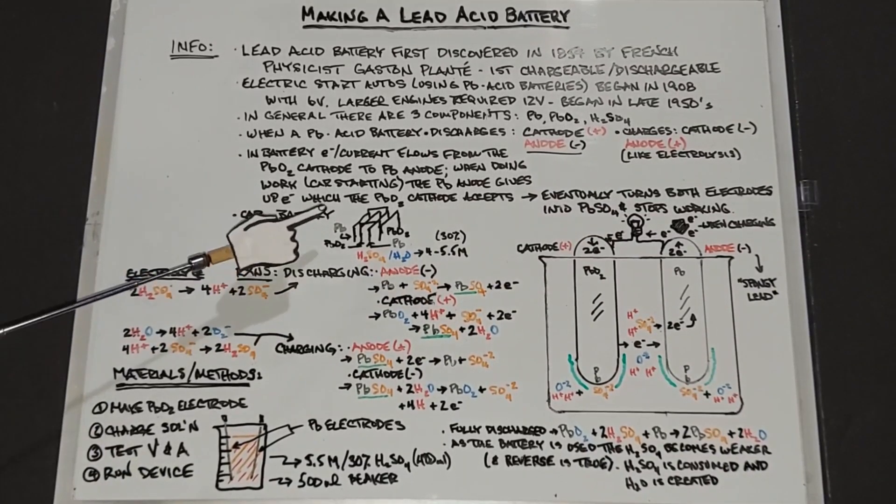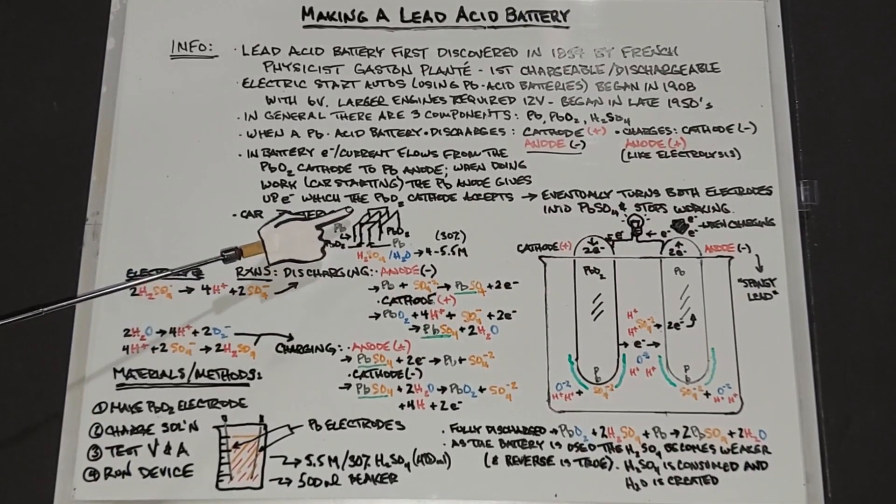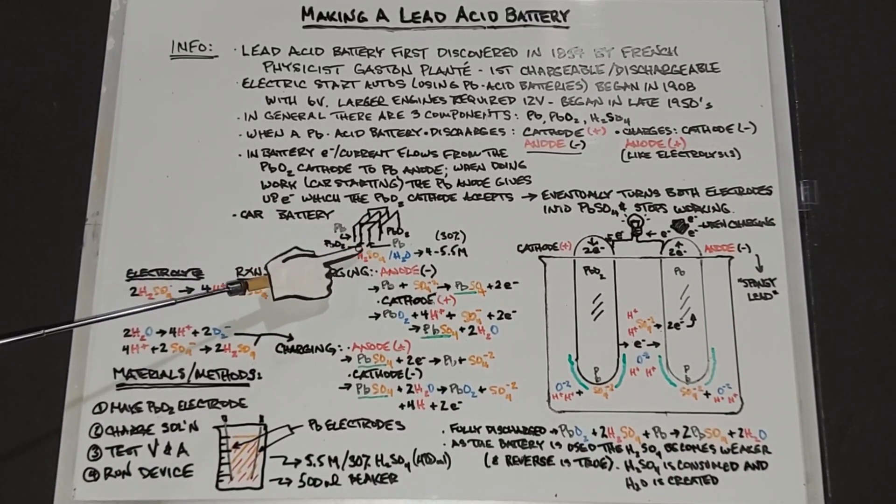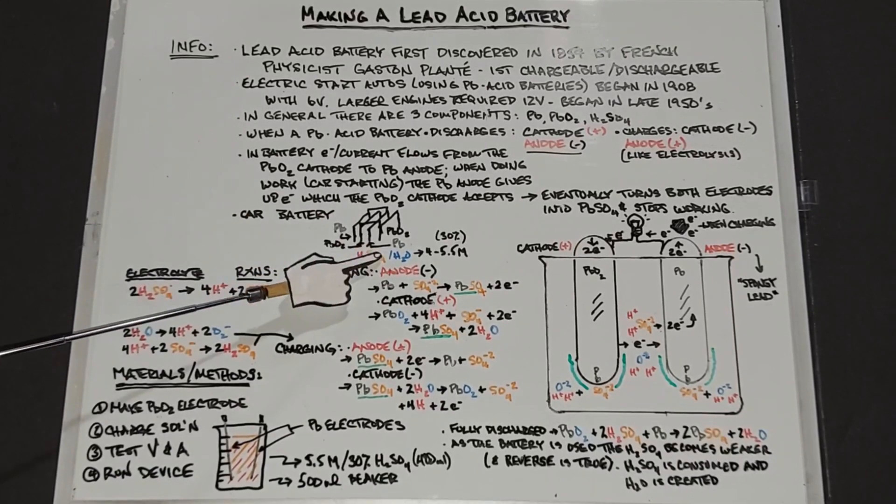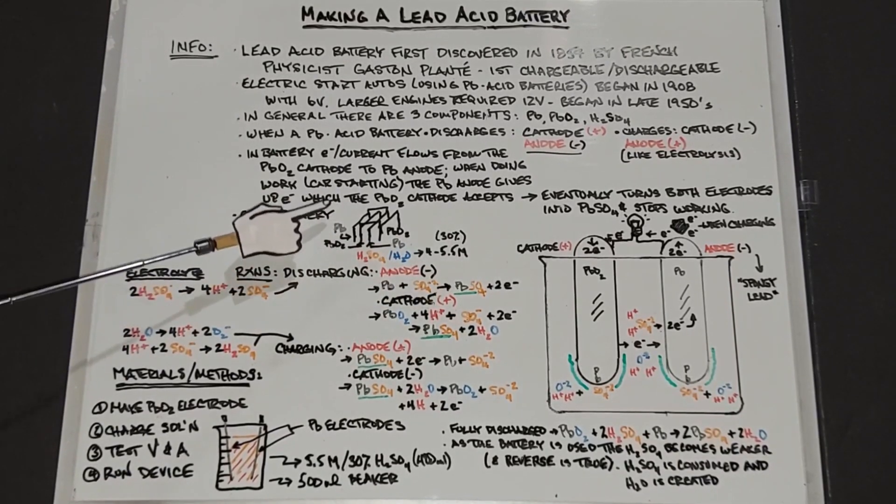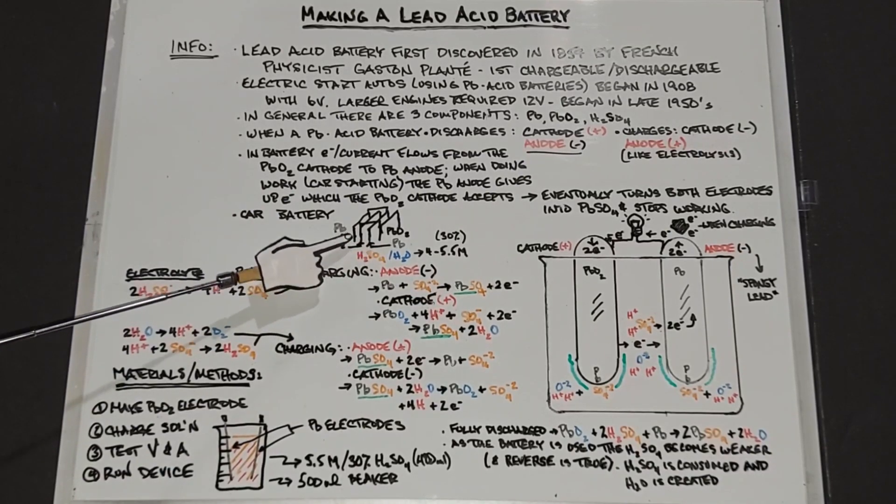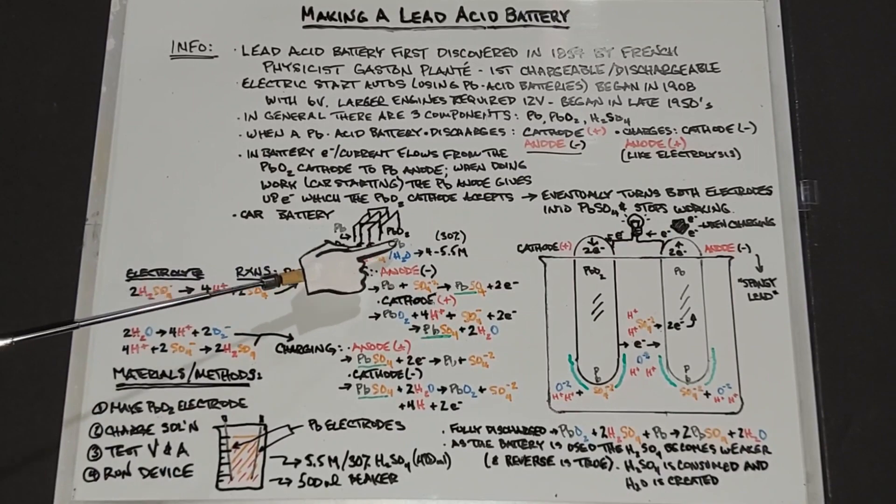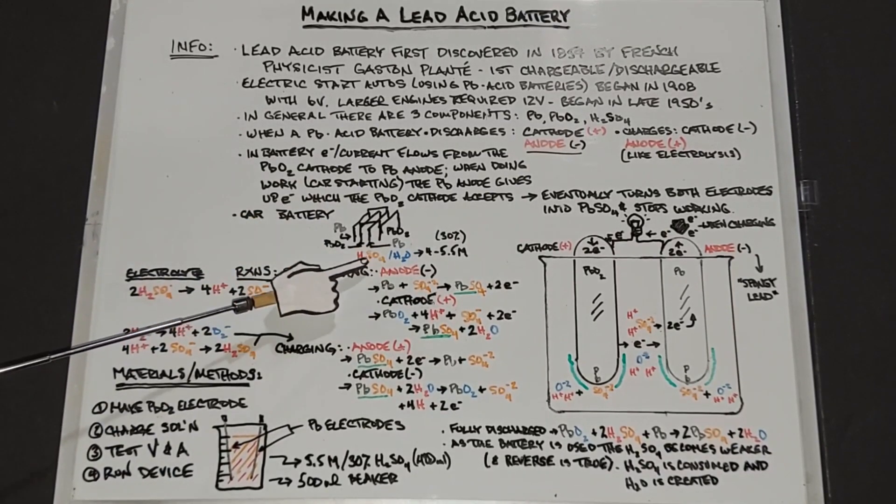Inside of a car battery they work as long as they do because there are alternating sheets of lead and lead dioxide. So the lead dioxide sheets are connected by wiring as one big electrode and the lead sheets are connected as the other big electrode.